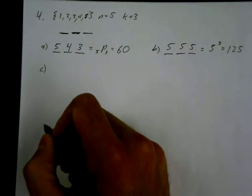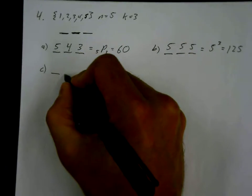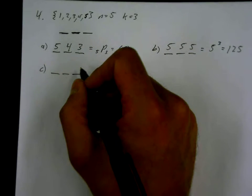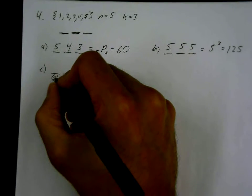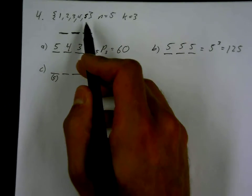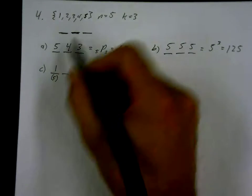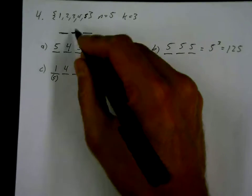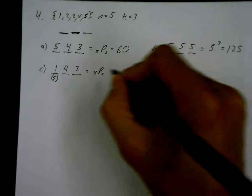Part c: no repetition allowed, and the number must be greater than 500. We still have three seats. The restriction is the number must be greater than 500, which means it has to start with a five — so there is just one number that could go in that first seat. After placing that five, repetition is not allowed, so I'm down to four for the second seat and three for the third. This equals 4P2 = 4 × 3 = 12.